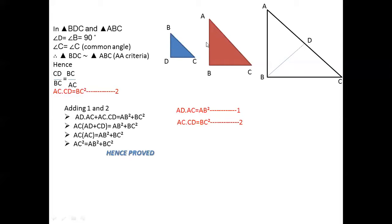The ratio of corresponding sides are equal. So CD by BC is equal to BC by AC. When BC comes in the numerator, then the denominator will be AC. So we cross multiply: CD into AC will be equal to BC into BC, that is BC squared. We take this as equation 2.